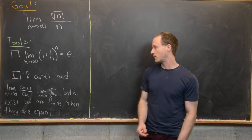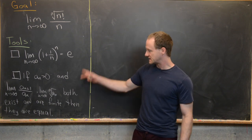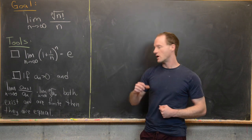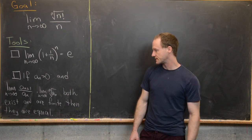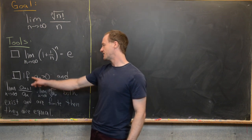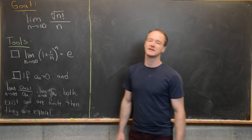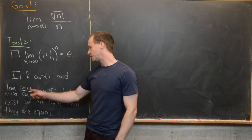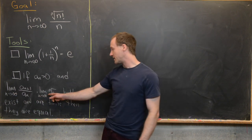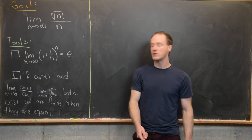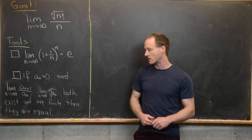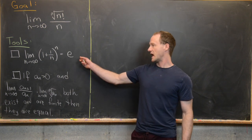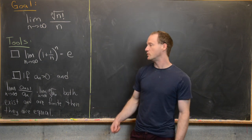We'll show this first just for completeness. The second tool is a result regarding the ratio of members of a sequence versus the root of members of a sequence: if a_n is greater than zero for all n, and the limit of a_{n+1} over a_n and the limit of the nth root of a_n both exist and are finite, then they must be equal. So let's prove the first tool and then move on to the second.